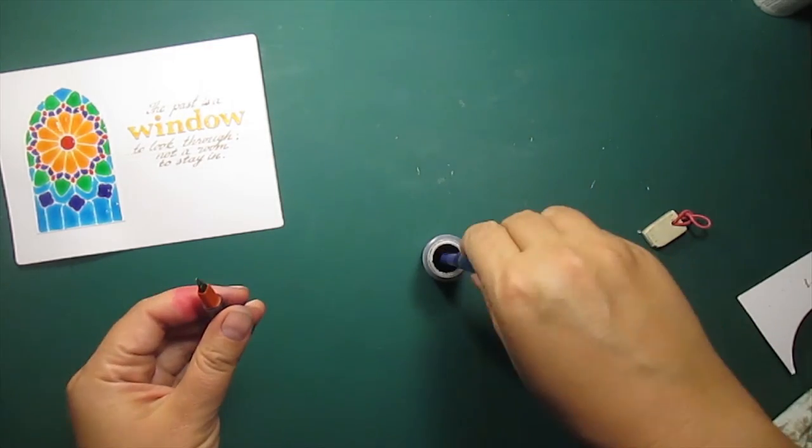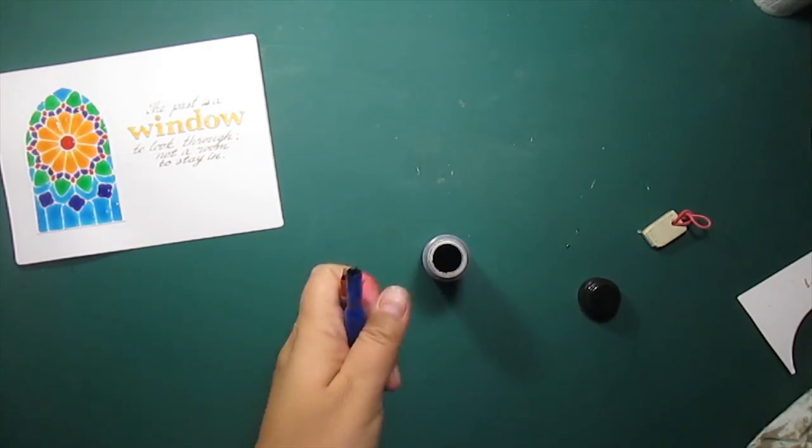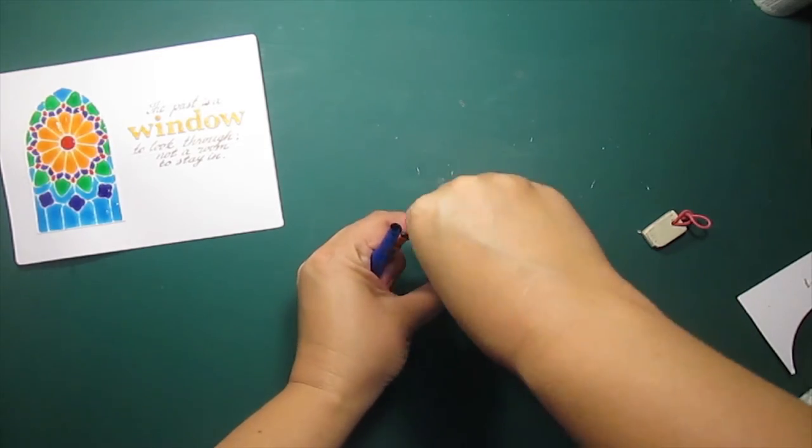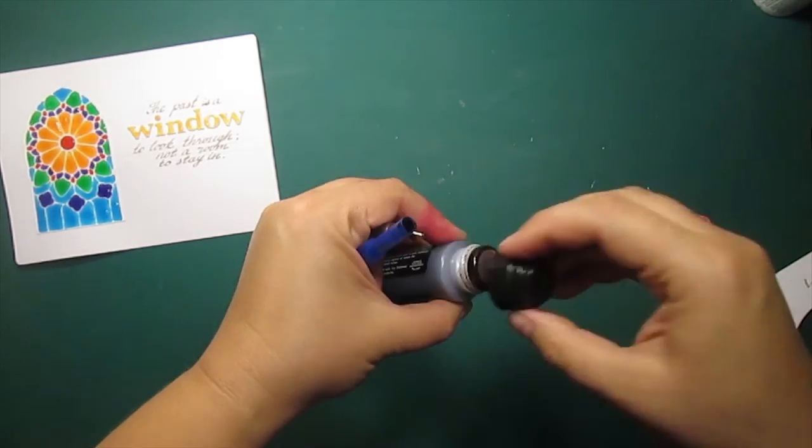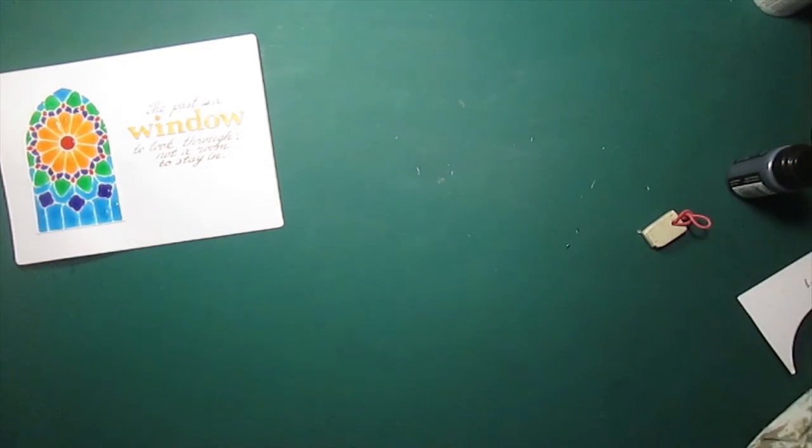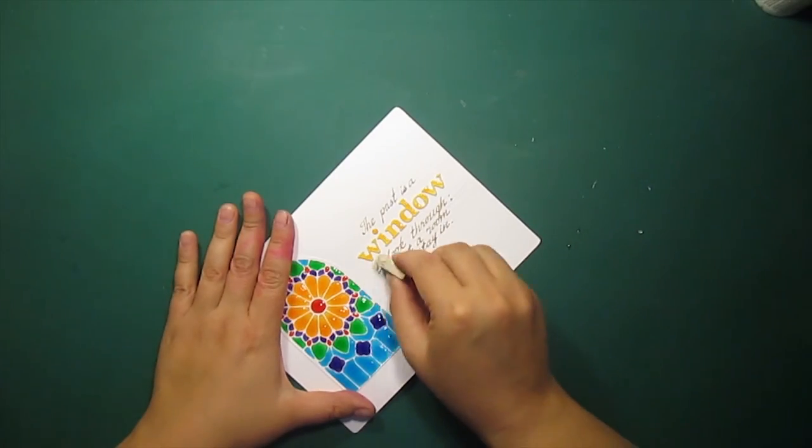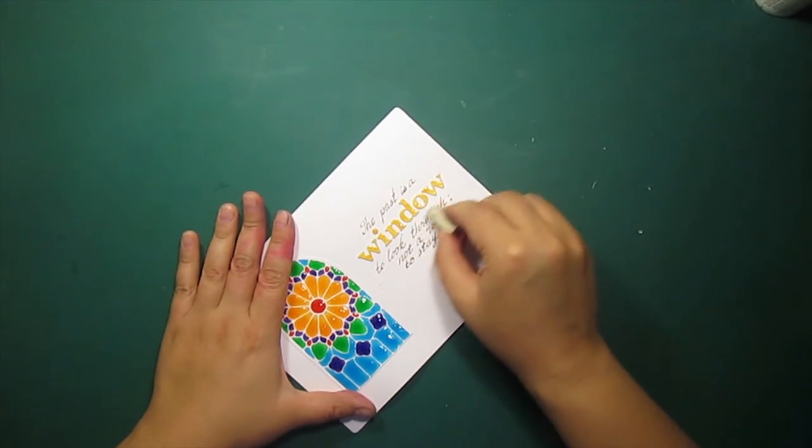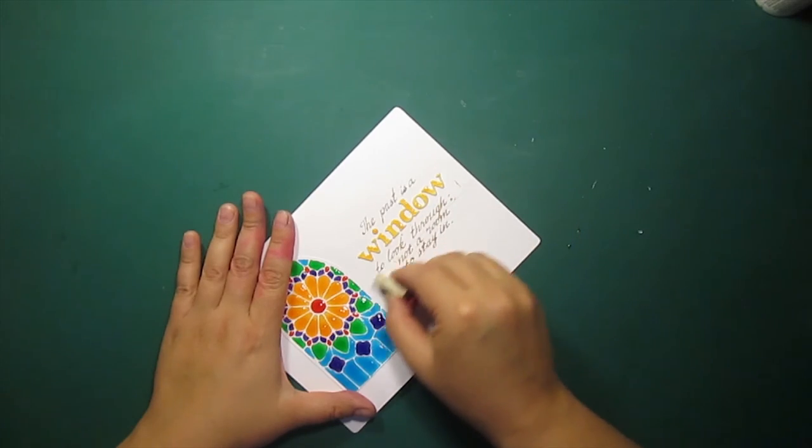Now I am returning the excess ink back in the bottle. I like how Distress Stains work with the fountain pens. When the stain is completely dry, I am erasing all the pencil marks.